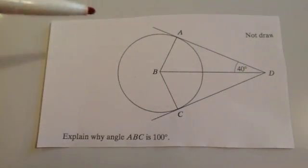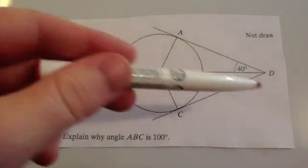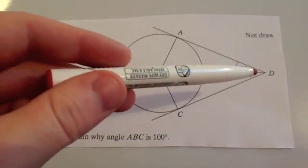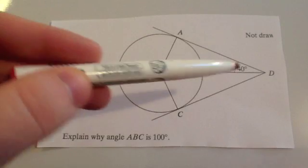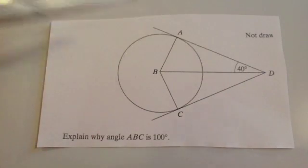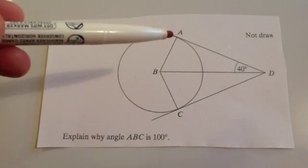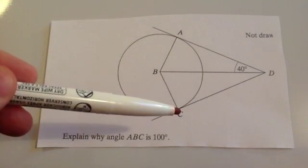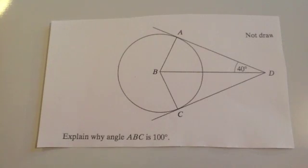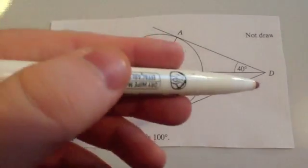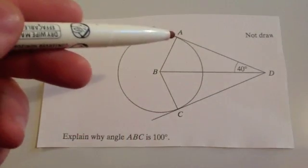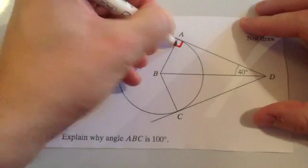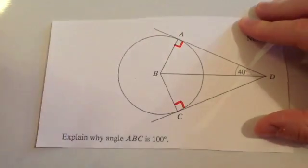In this question, you've got a circle with two tangents that touch the circumference, and a line joining the centre to the external point where the tangents originate from. We need to explain why angle ABC is 100 degrees. Circle theorem 6 says a tangent will touch the circle, and where you draw the radius to that point the angle will be 90 degrees. So this is a 90-degree angle and that's a 90-degree angle.